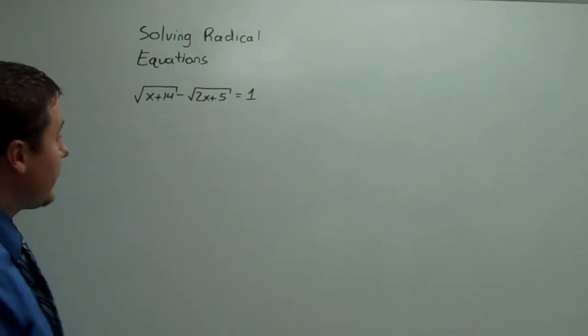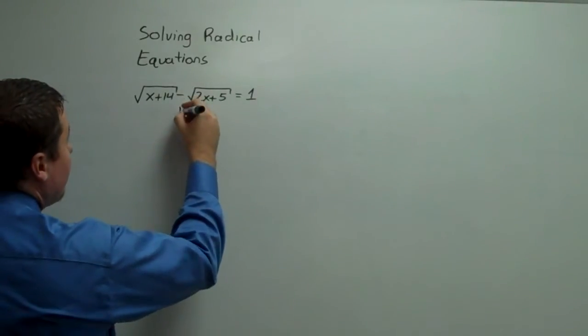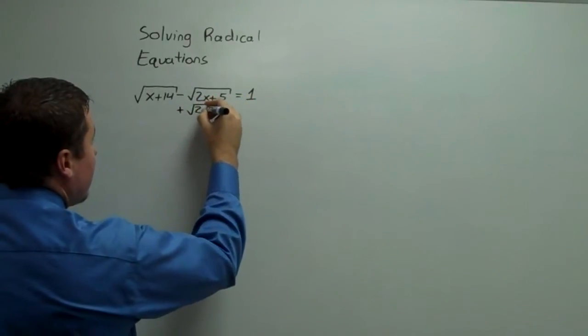So let's move the radical 2x plus 5 to the other side.